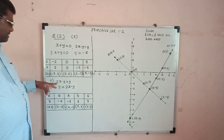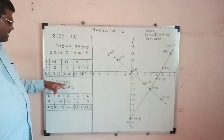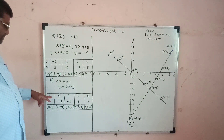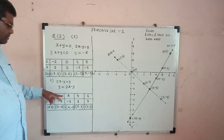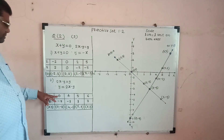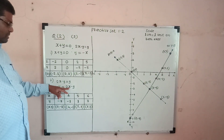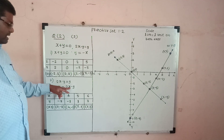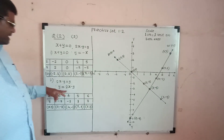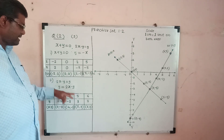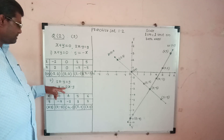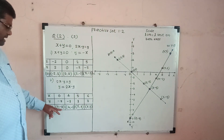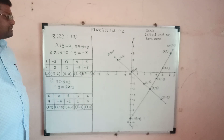Now consider the equation 2x minus y equals 9. From this, y equals 2x minus 9. Take values of x as 0, 4, 5, and 6. When x equals 0, y equals minus 9. When x equals 4, y equals minus 1. When x equals 5, y equals 1. When x equals 6, y equals 3. Ordered pairs: (0, −9), (4, −1), (5, 1), (6, 3).